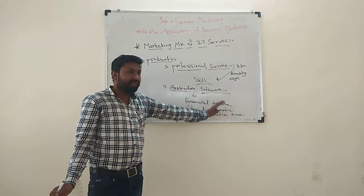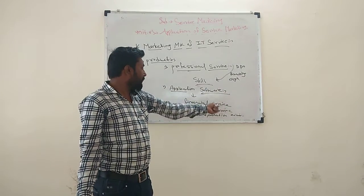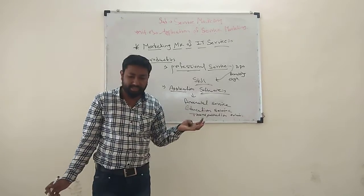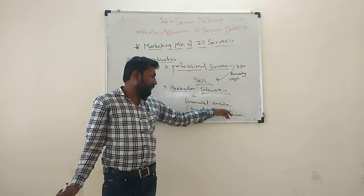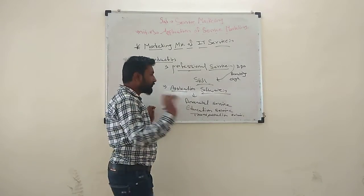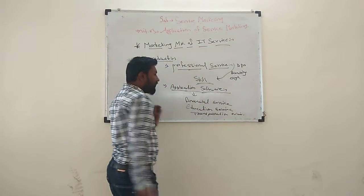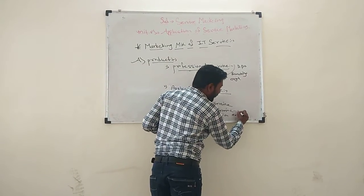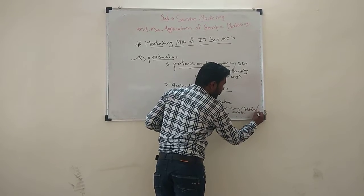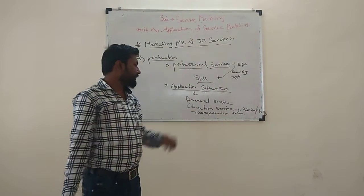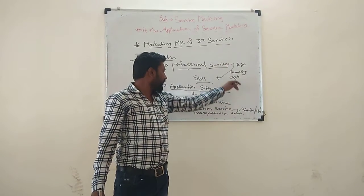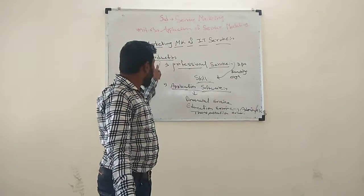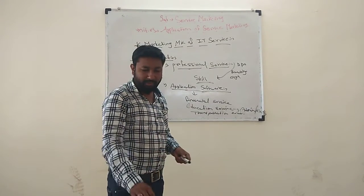For example, in transportation, when a product is delivered, the application and the product are in the same location. The application is then used in the administration department and the account section. Financial service management and banking are examples of application software.